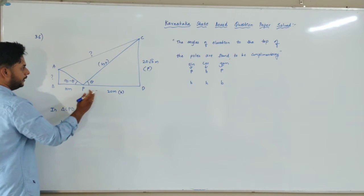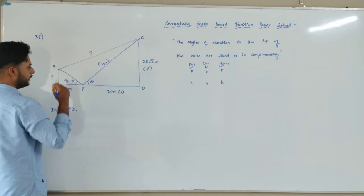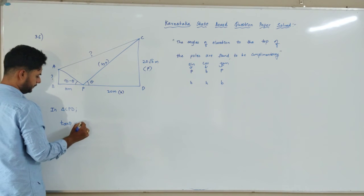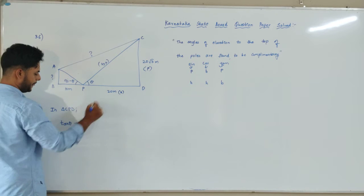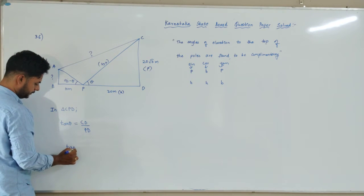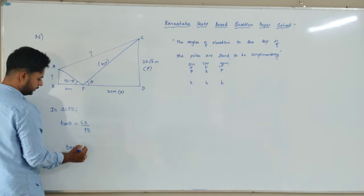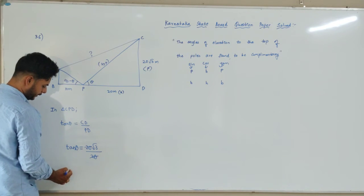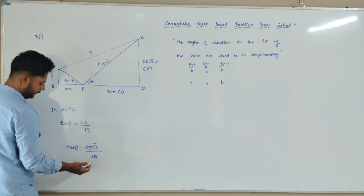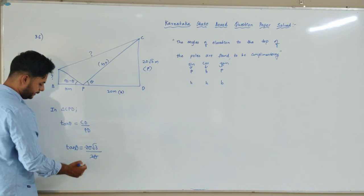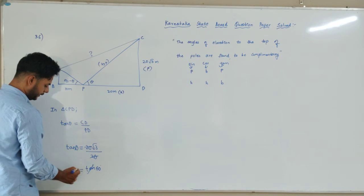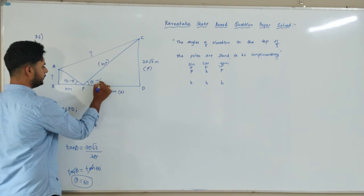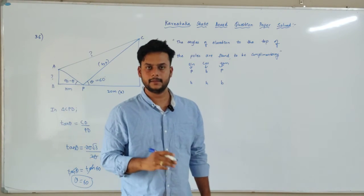I went with tan because I have the perpendicular and base — I am not finding the hypotenuse. Tan theta equals perpendicular by base; perpendicular is CD and base is PD. Tan theta equals CD which is 20 root 3, by PD which is 20. The 20s cancel, so tan theta equals root 3. Tan 60° equals root 3, so theta equals 60 degrees.